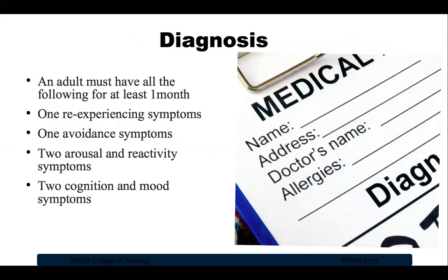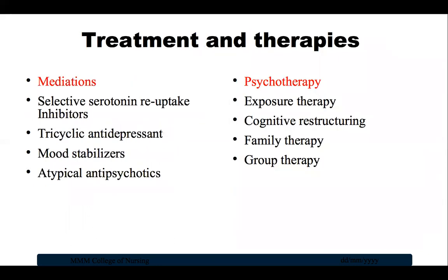For a diagnosis of PTSD in an adult, the person must have all of the following symptoms for at least one month: at least one re-experiencing symptom, at least one avoidance symptom, at least two arousal and reactivity symptoms, and at least two cognitive and mood symptoms. If a person falls into this category, they can be diagnosed with PTSD.